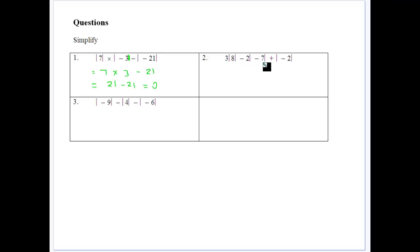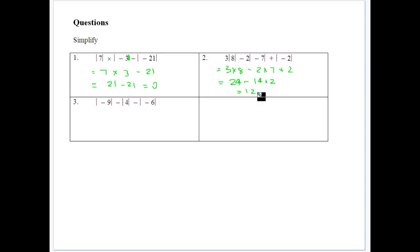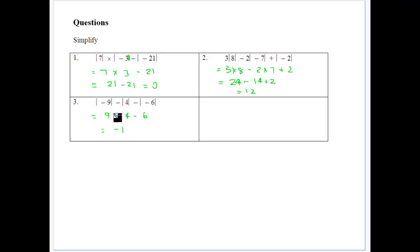Next, do your absolute values first. This comes down to 3 times 8, minus 2 times — the minus 7 becomes positive 7 — plus the absolute value of 2. Minus 2 gives you 2, so that gives you 24 minus 14 plus 2, which equals 12. Then: 9 minus the absolute value of 4, which is just 4, minus the absolute value of minus 6, which is 6. So 9 minus 4 minus 6 gives us minus 1.